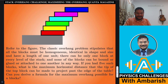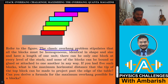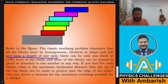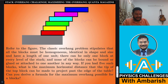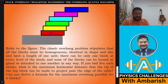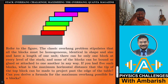Let me read out the problem. The classic overhang problem stipulates that all the blocks must be homogeneous, identical in shape and size, and have a length of one unit. There can be only one block at every level of the stack, and none of the blocks can be bound, glued, or attached to one another in any way — they are just placed over one another.